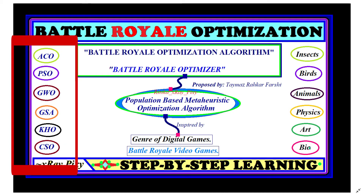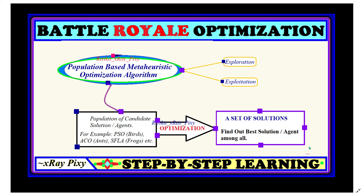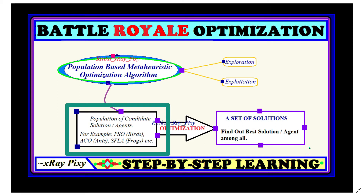Inspired by art, bio, physics, chemistry, and other domains, we will now try to understand a new optimization algorithm named the Battle Royal Optimization algorithm. This is a recently proposed meta-heuristic optimization algorithm inspired by battle royal video games. Population-based meta-heuristic optimization algorithms start with an initial population of agents, or candidates.